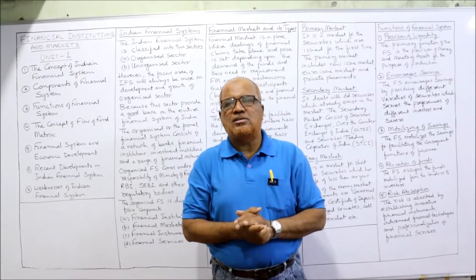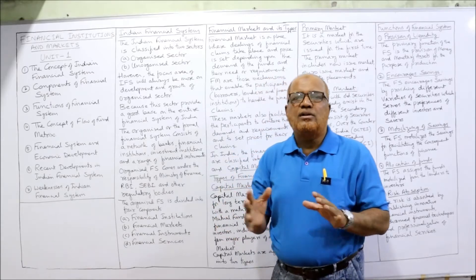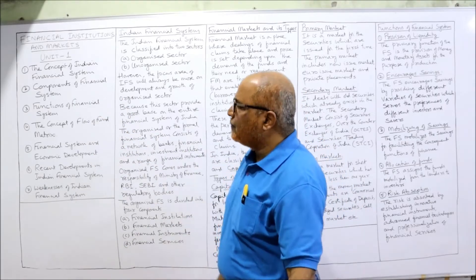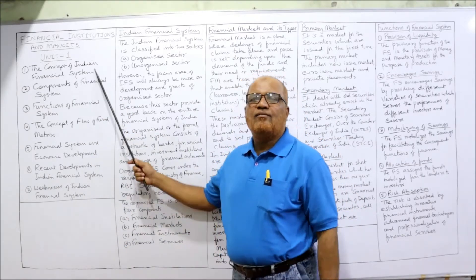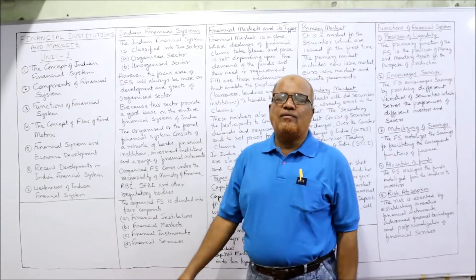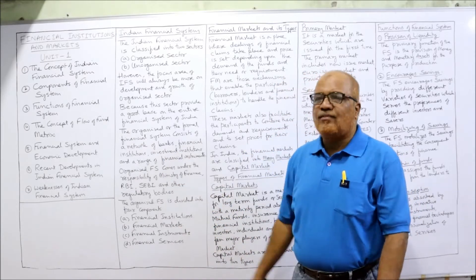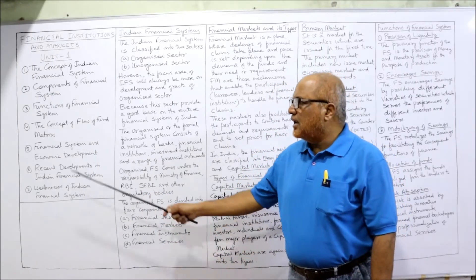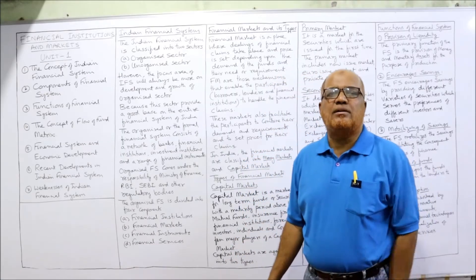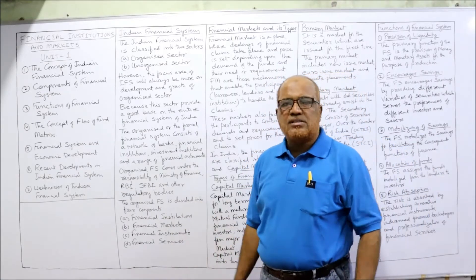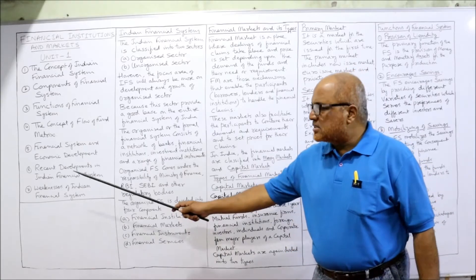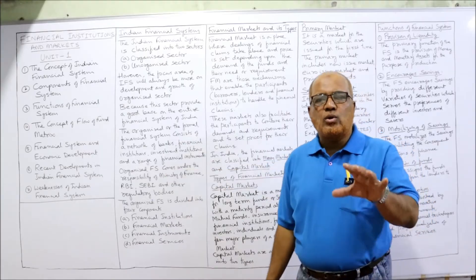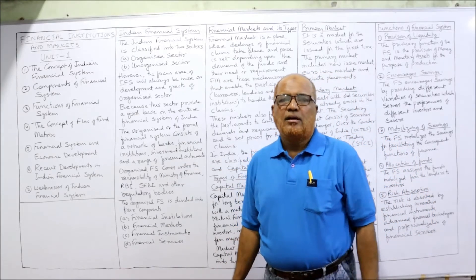So now I'm going to start — this is the first video on this subject. I will cover five units in total. In this first unit, I will cover: the concept of the Indian Financial System, components of the financial system, functions of the financial system, the concept of the flow of funds matrix, financial system and economic development, recent developments in the Indian Financial System, and lastly the weaknesses of the Indian Financial System.